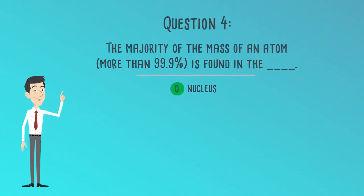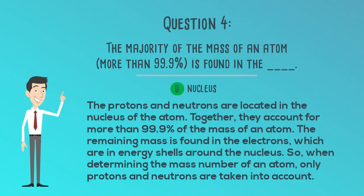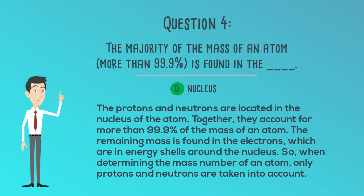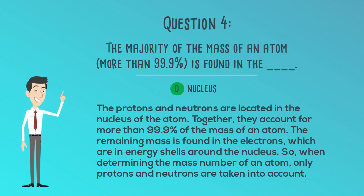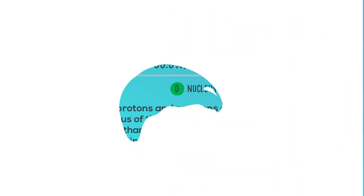The correct answer is D. Nucleus. The protons and neutrons are located in the nucleus of the atom. Together, they account for more than 99.9% of the mass of an atom. The remaining mass is found in the electrons, which are in energy shells around the nucleus. So when determining the mass number of an atom, only protons and neutrons are taken into account.